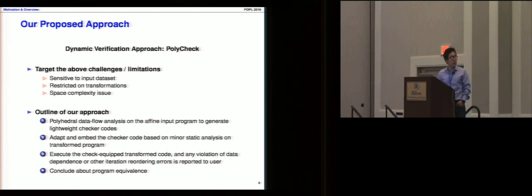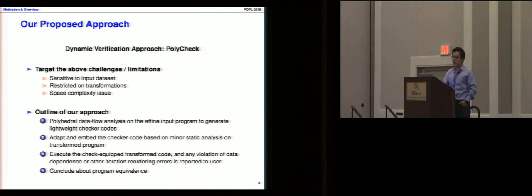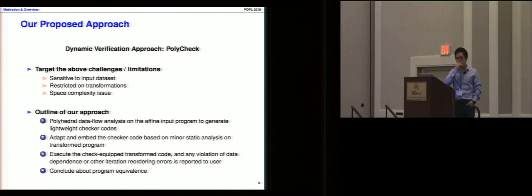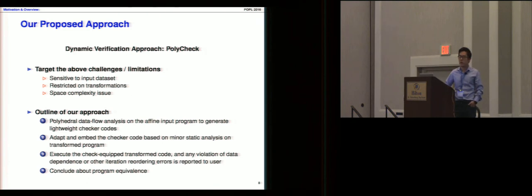Now I will introduce our proposed approach, which is a hybrid static plus dynamic approach to perform dynamic verification. We target both the dataset restriction challenge and the space complexity challenge. The outline is as follows: first, we perform a polyhedral static analysis on the input program and generate checker code; then we embed this checker code into the transformed program, run it, and any violation of data dependence or iteration reordering will be reported; finally, we conclude about program equivalence.